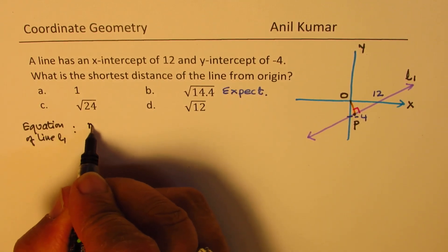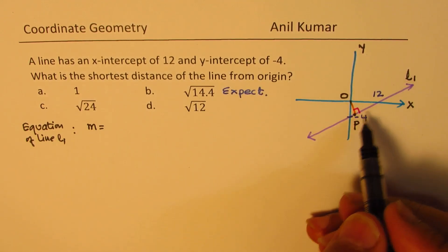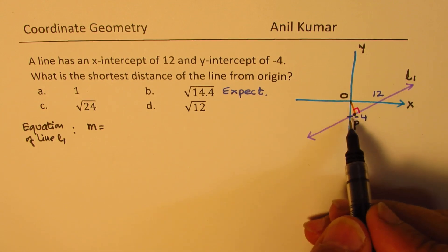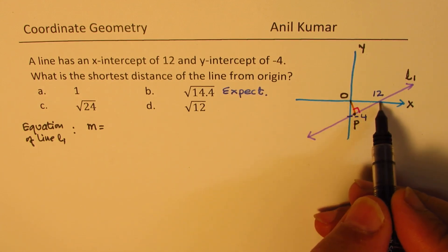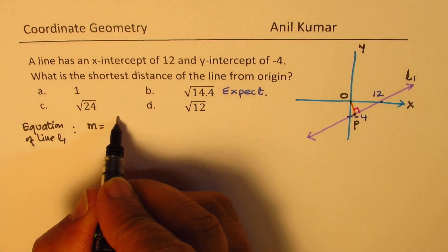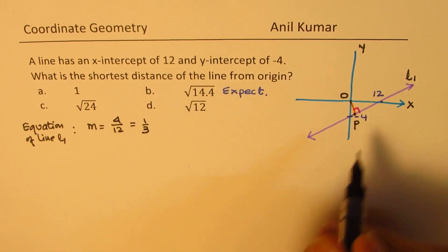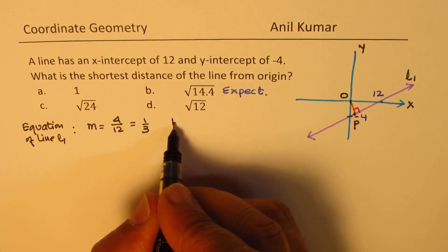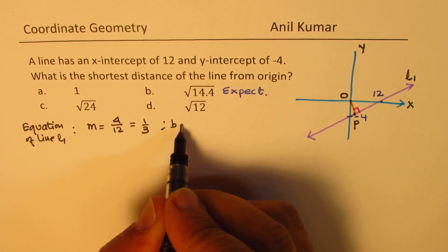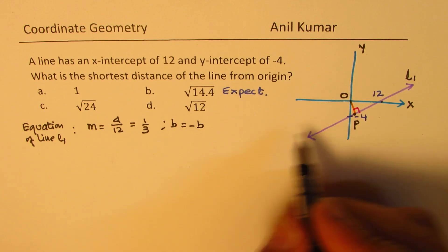We have the slope M. As you can see, it is a positive slope going up by 4, rise and run is 12. So, it is definitely 4 over 12, which is 1 over 3. We could take Y intercept, which is the value of B, equals to minus 4.